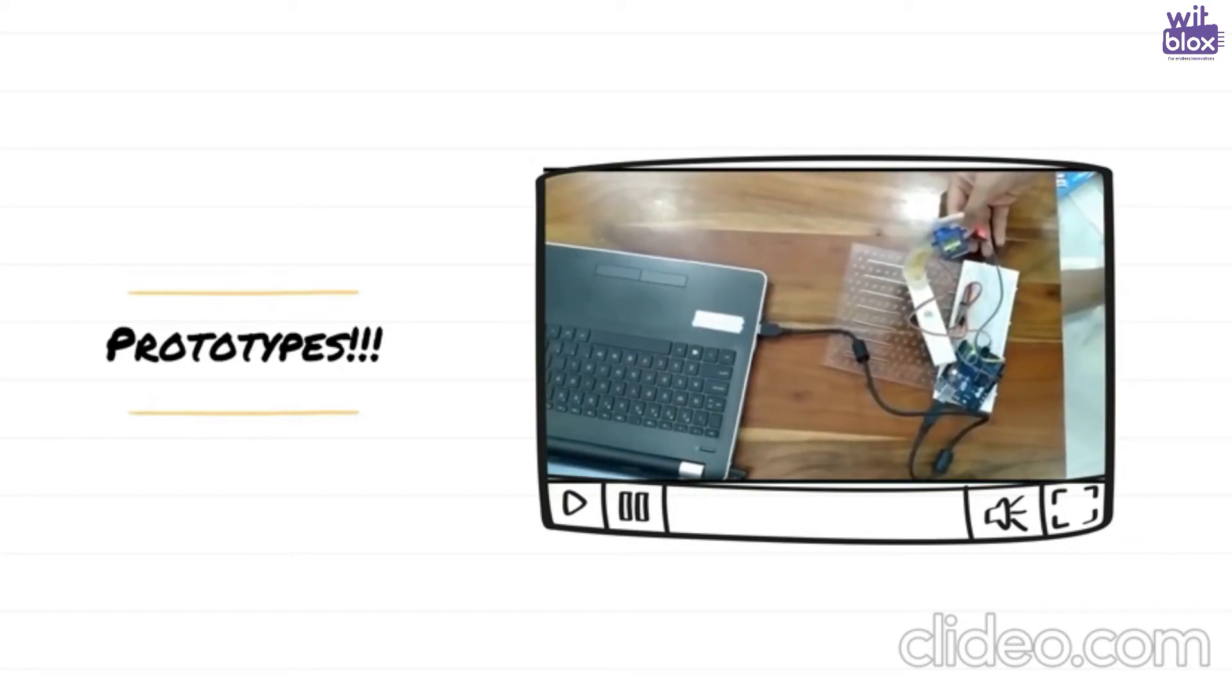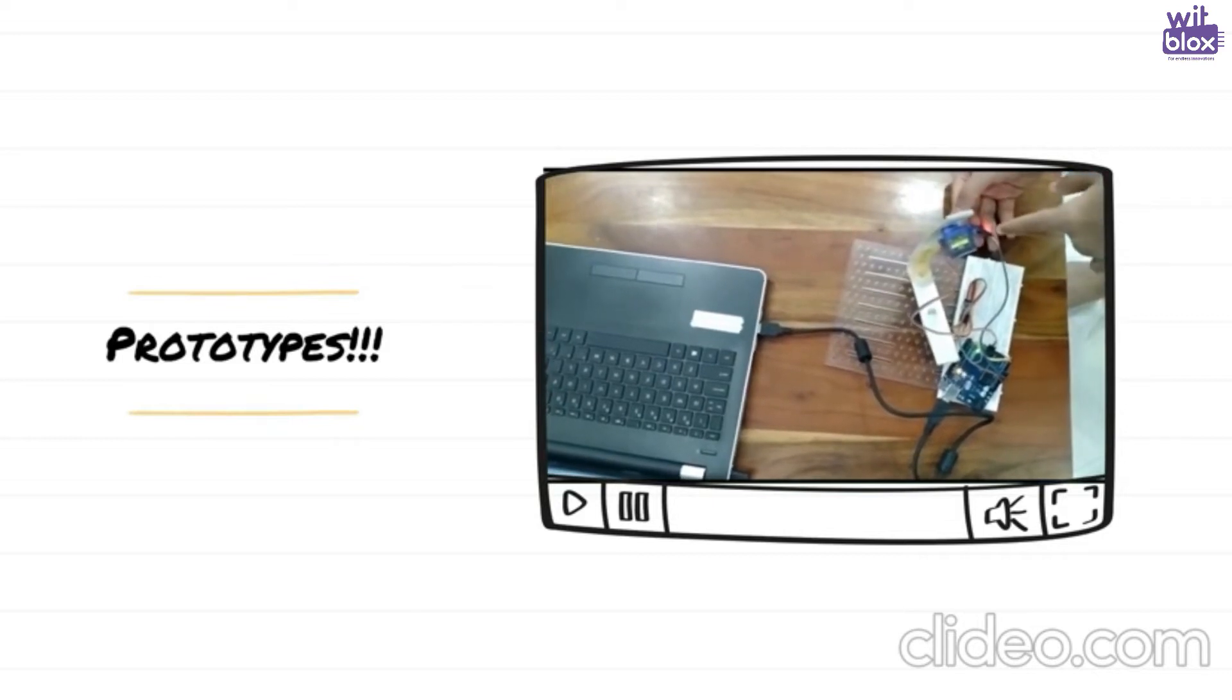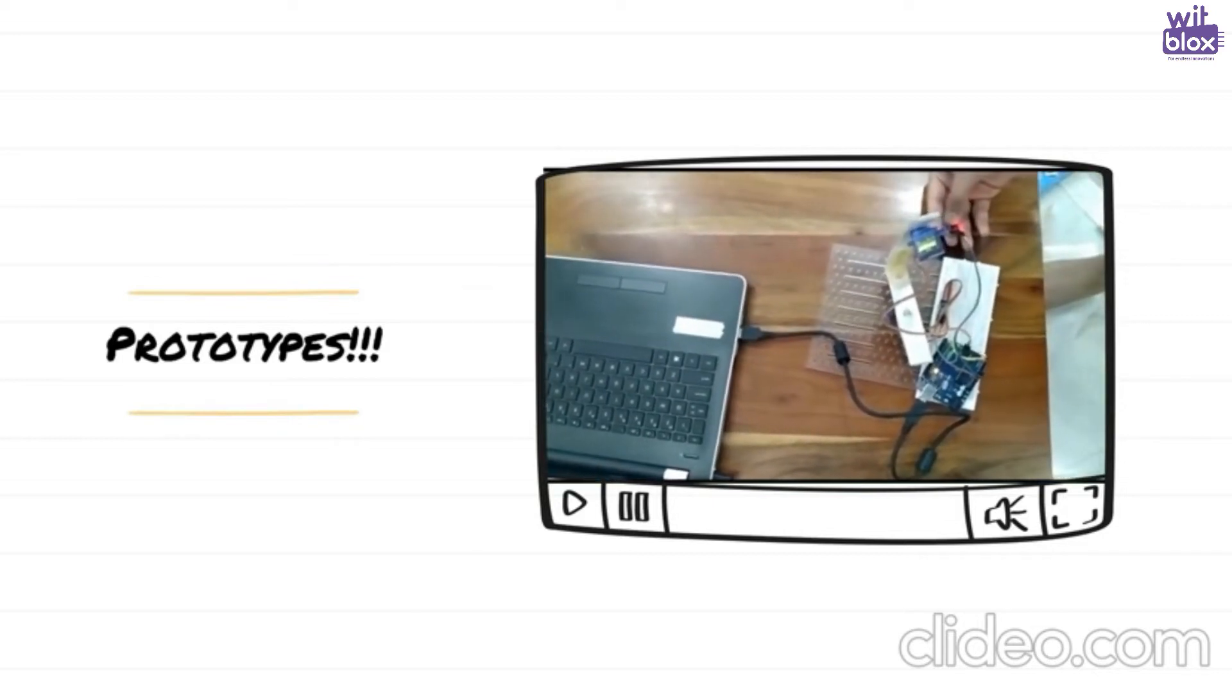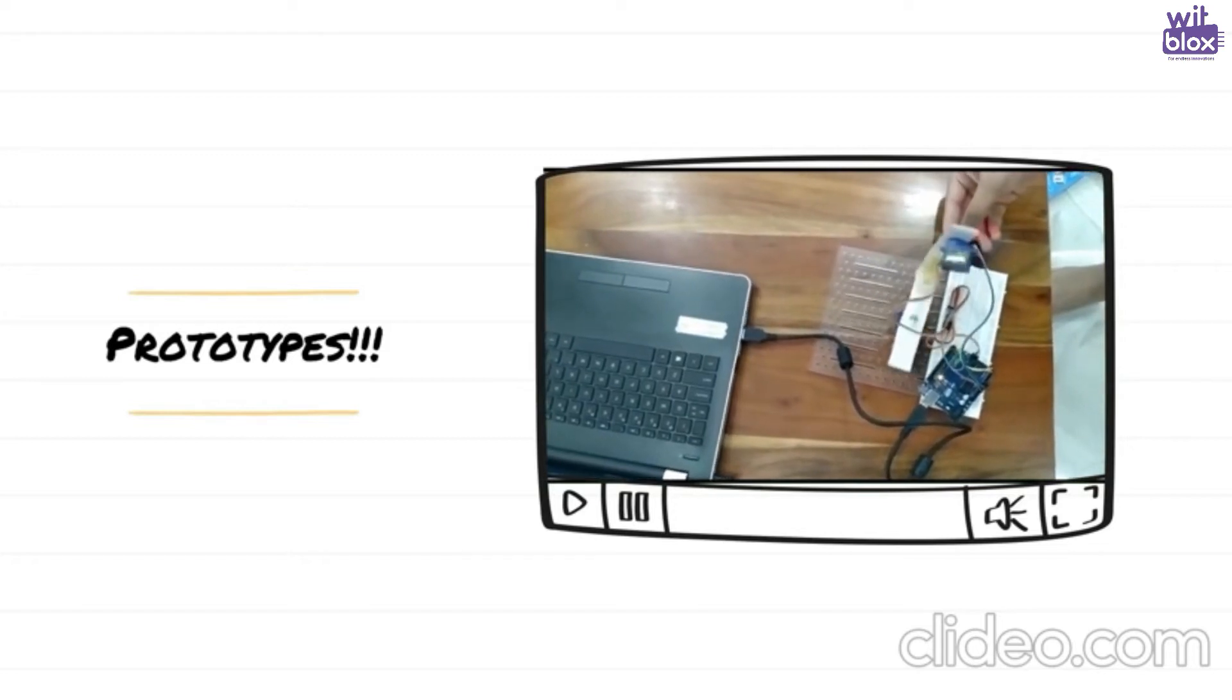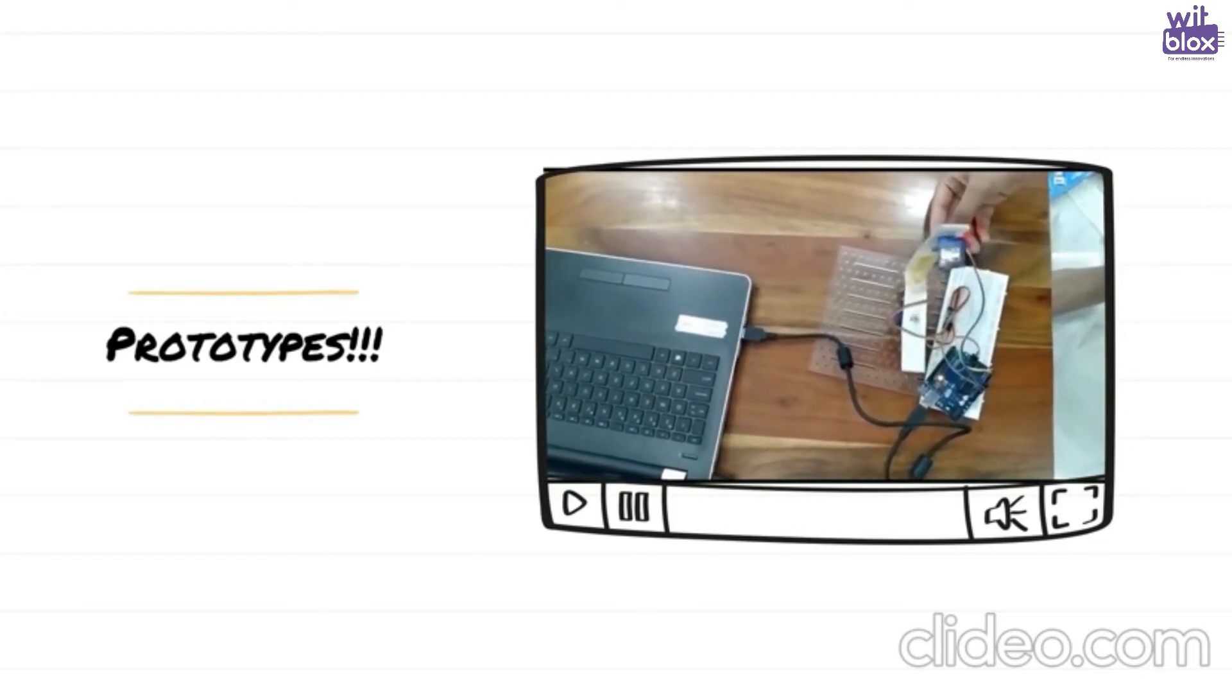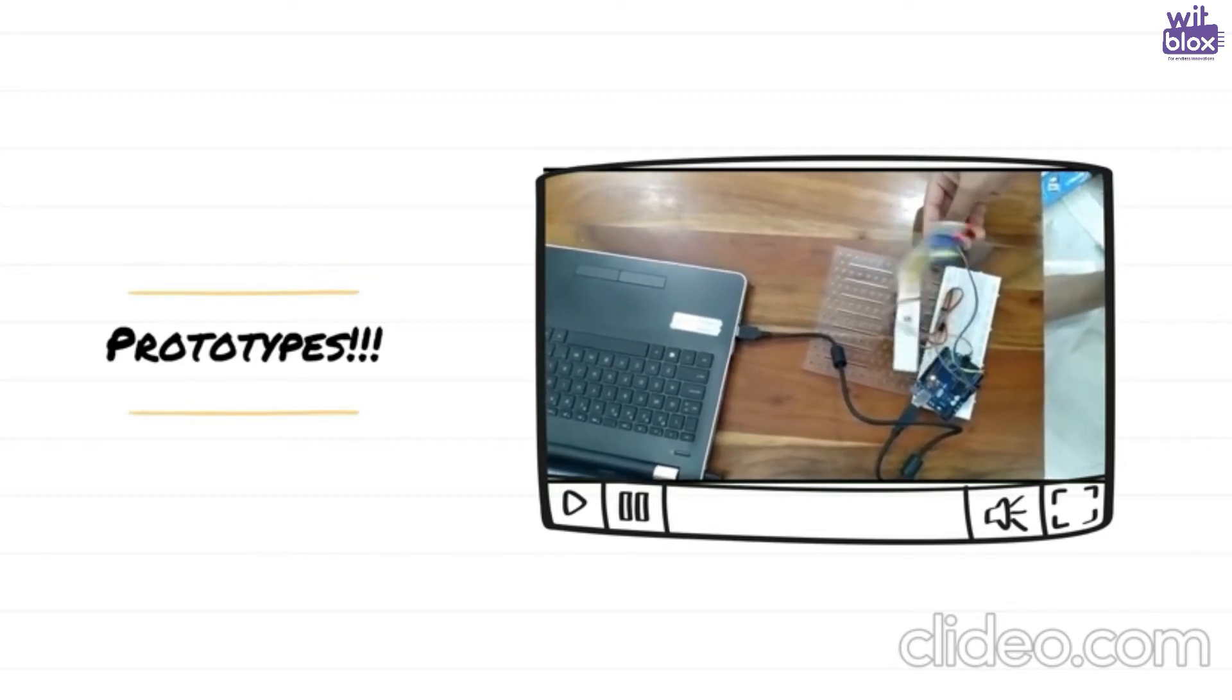This is my modified model of a dual-axis solar tracker. It works with an accelerometer and it is best for vehicle tops. So when the accelerometer moves, that is when the vehicle moves, the solar panel also automatically moves along with it in the opposite direction.